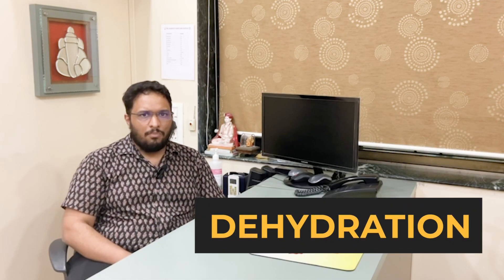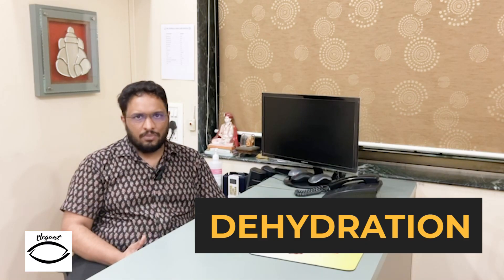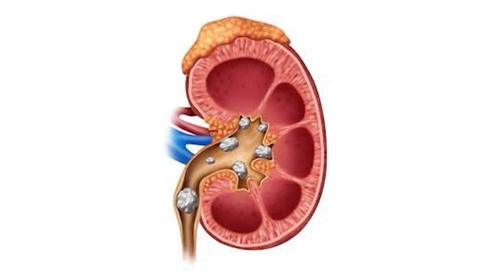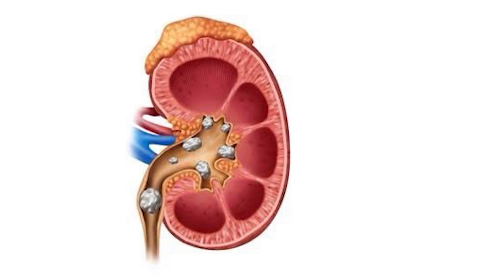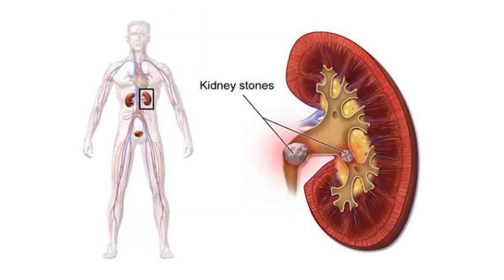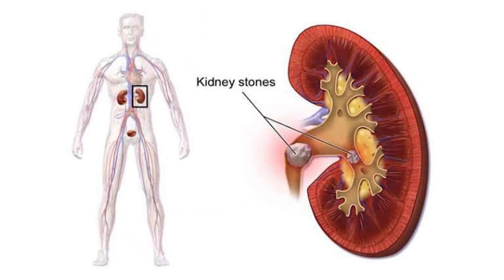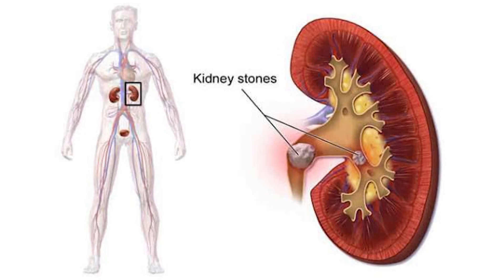Kidney stones form basically out of a simple factual process. The most common cause in India is dehydration. We live in Bharat, which is a tropical country. We sweat a lot, which we call nonsensible loss of fluid. Therefore, our urine is extremely concentrated. This concentrated urine forms one of the most perfect substrates for stone formation, wherein the stone crystals aggregate, crystallize, and get bigger with time.